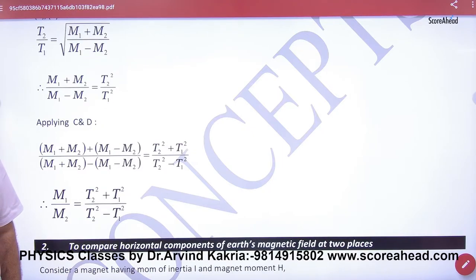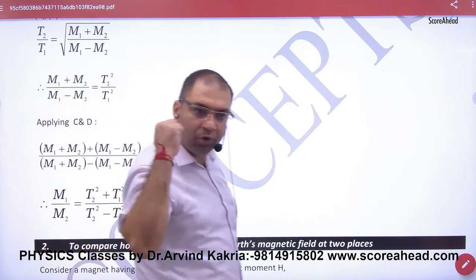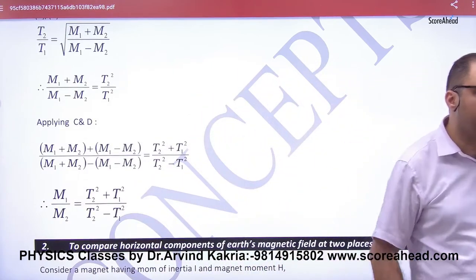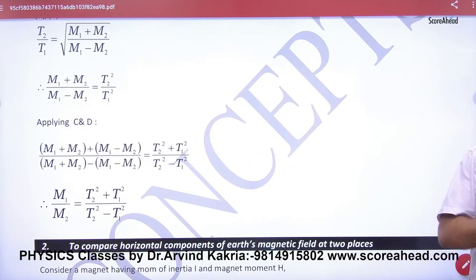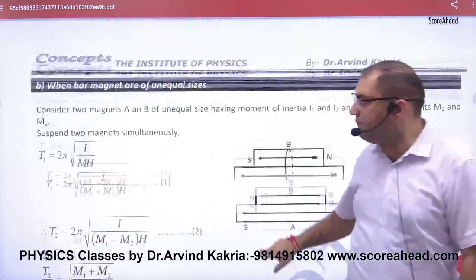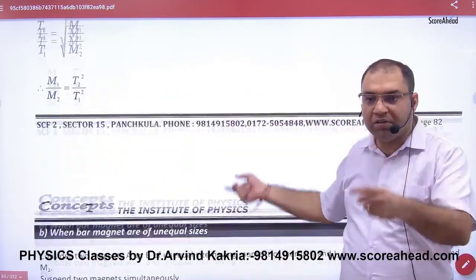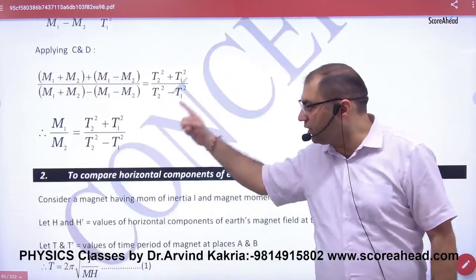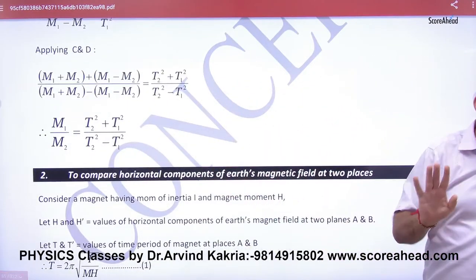If you don't want to derive that, then remember the formula for M1 and M2. If there is equal size magnet to compare M1 and M2, use that formula. If there is unequal size, use the other formula. Done.